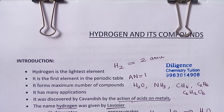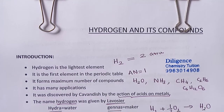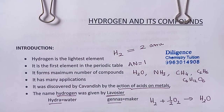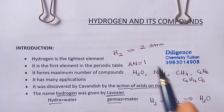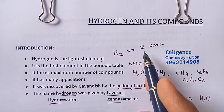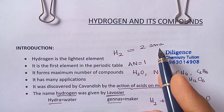Hydrogen and its compounds. In this video we shall discuss the introduction, occurrence, and isotopes of hydrogen. Hydrogen is the lightest element because hydrogen contains H2 molecules, and the molecular weight of H2 is 2 AMU.